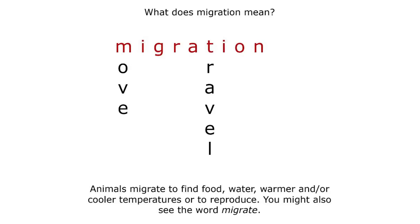But what does migration mean? Let's take a look at these key words to understand this word better: move and travel. Animals migrate to find food, water, warmer and/or cooler temperatures, or to reproduce. You might also see the word migrate.